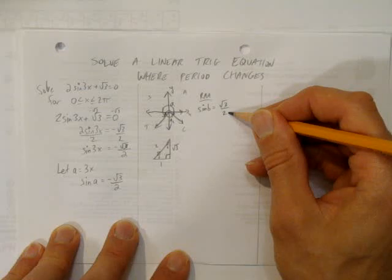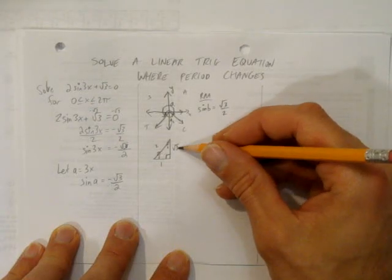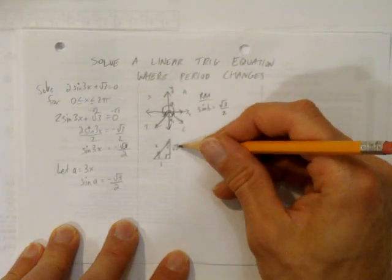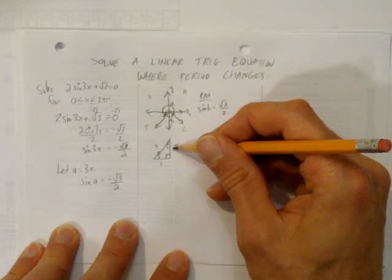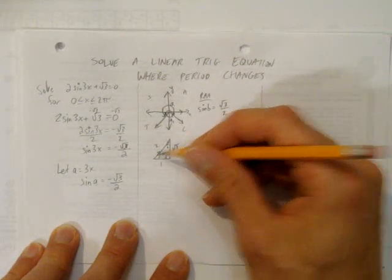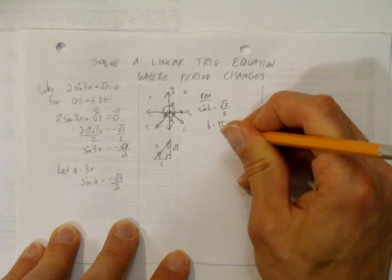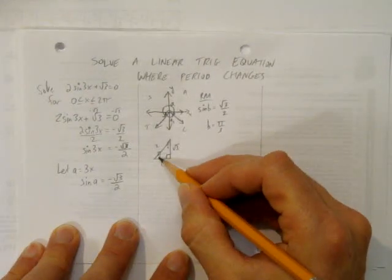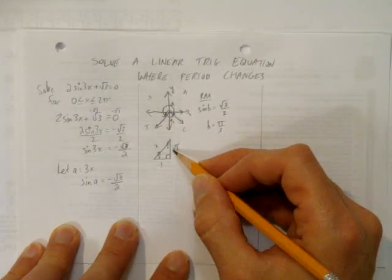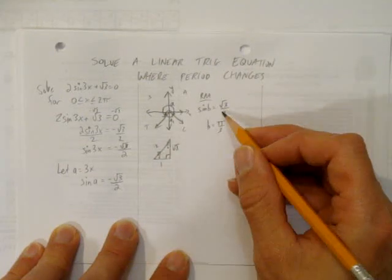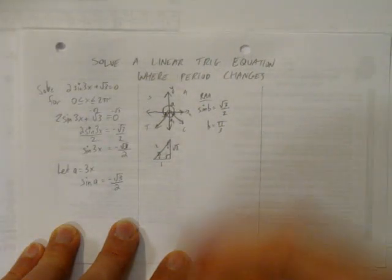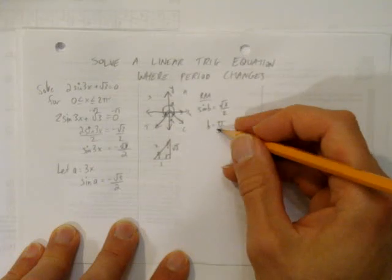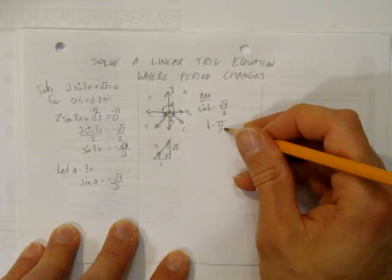So what has opposite over hypotenuse? Sine is opposite over hypotenuse. I want the opposite and the hypotenuse to be root 3 over 2. So that has to be this and this, which means it would be opposite angle for that. So b's got to be pi over 3. That's because pi over 3 would give the opposite over hypotenuse of what we want, root 3 over 2. So we solve for the related acute angle, b is pi over 3.